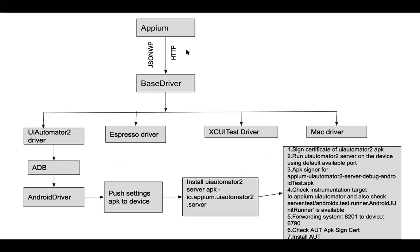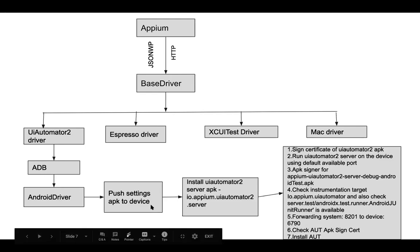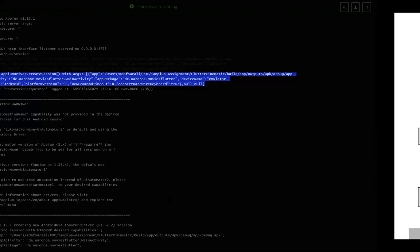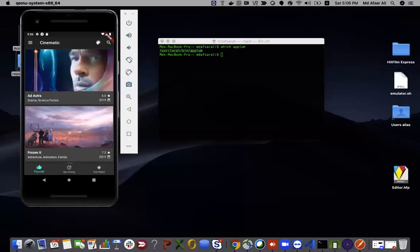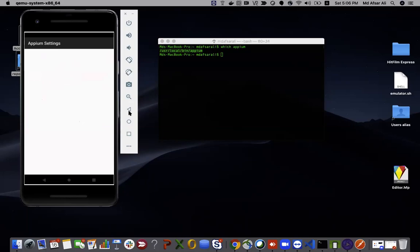Looking at the flow diagram: from the HTTP request, everything is converted into JSON Wire Protocol in the base driver. The base driver then determines which driver to instantiate — UI Automator, XCUITest, or Mac driver. For Android with UI Automator 2, it goes through the UI Automator 2 driver, ADB, and Android driver, then pushes the settings APK to the device. This settings APK gets installed and signed.